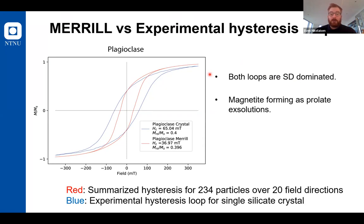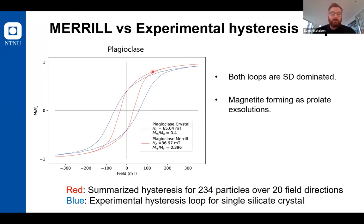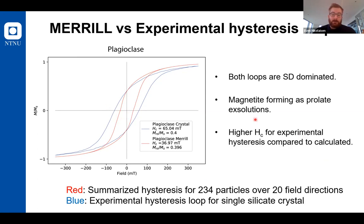You can see the particles here formed as prolate exsolutions. We have about 234 particles, which are combined into this red curve. However, we can also see that there is an offset. While the MR over MS is quite equal, the coercivity does have an offset, and we can see that the coercivity is higher for the actual measurement than for our calculation.